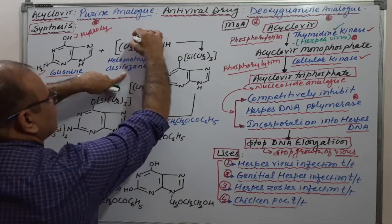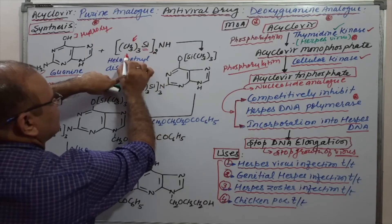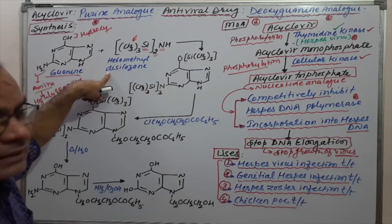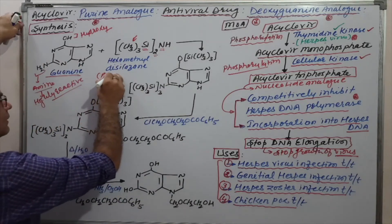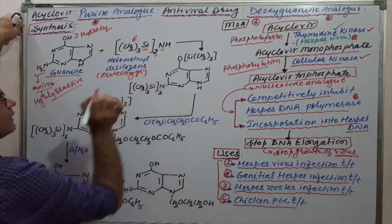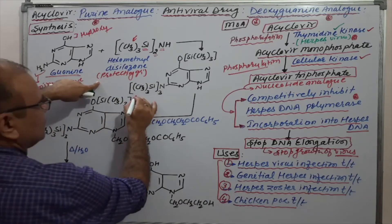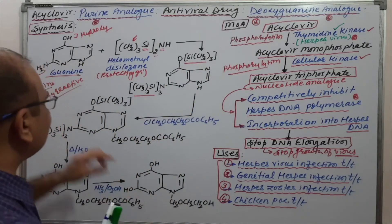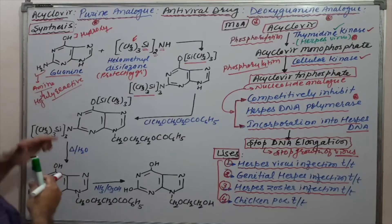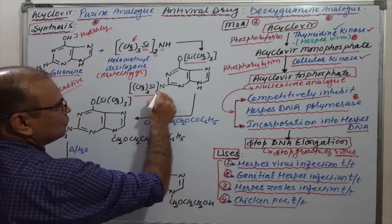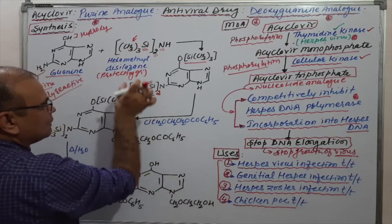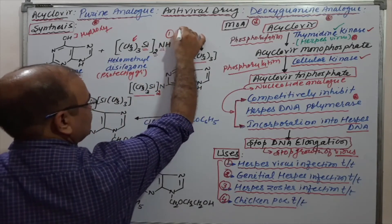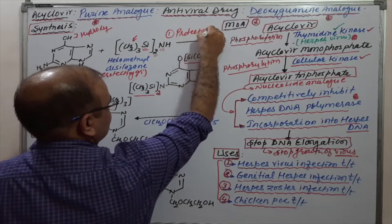Hexamethyldisilazane contains silicon with three methyl groups, doubled — attached to the amino group — and it acts as a protecting group. This protecting group is directly attached to the amino group as well as the OH group, replacing the hydrogen atoms: two hydrogens on the amino group and one on the OH group. This is the first reaction: protection of the reactive groups.